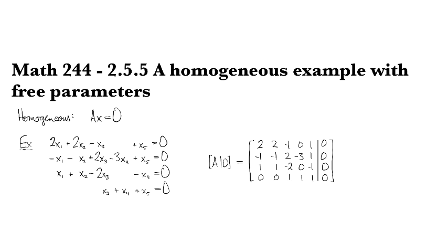Let's look at an example of a homogeneous system. Recall that homogeneous means that there's a zero here as the constant vector.